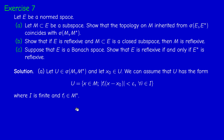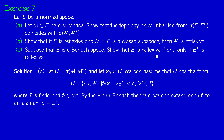Now, how to get from elements Fi in M* elements in E*? This is where the Hahn-Banach theorem comes in. We can extend Fi, which is an element in M*, to an element Gi in E* with the same norm. This extension is not unique in general. So Gi is the same as Fi but now defined on the larger space E, not just on M.